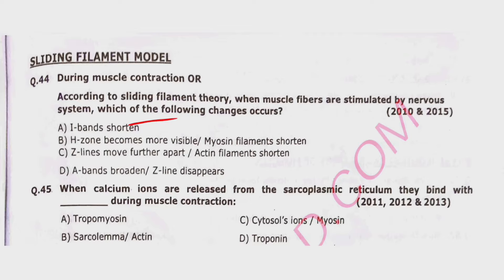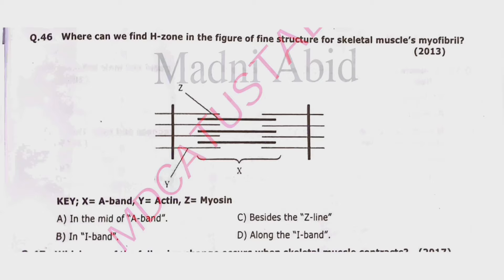Question 45: When calcium ions are released from the sarcoplasmic reticulum, they bind with which structure during muscle contraction? Options: tropomyosin, sarcolemma, actin, cytosol, myosin, or troponin. Correct option is delta — troponin. Question 46 asks about identifying the X zone in a diagram of fine structure of skeletal muscle myofibril.